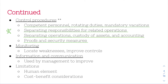I'd recommend reading that section of the chapter to be clear on all the control procedures. The fourth element is monitoring — locating weaknesses and improving your controls. Whereas risk assessment was external, monitoring is internal. You should be looking at all of your control procedures and the control environment, looking for weaknesses, seeing if there are things that could be improved, and working to fix them. The fifth element is information and communication, which joins everything together and is used by management to improve — listening to employees and talking to management about what can be done better.